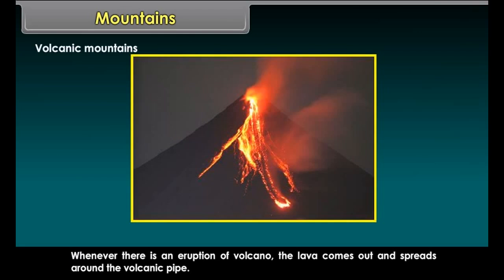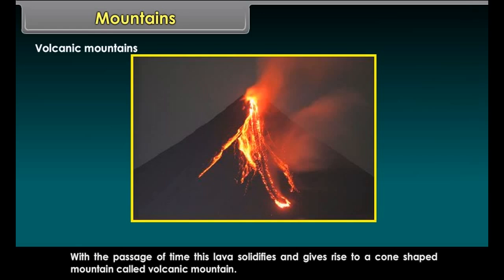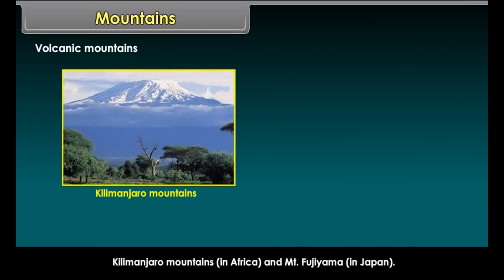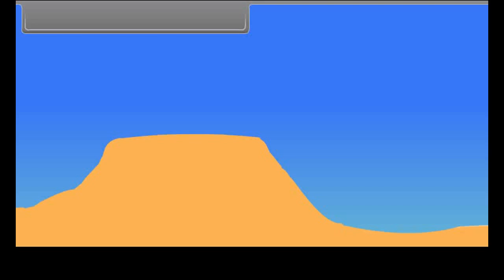Volcanic Mountains form whenever there is an eruption of a volcano. The lava comes out and spreads around the volcanic pipe. With the passage of time, this lava solidifies and gives rise to a cone-shaped mountain called a Volcanic Mountain. Kilimanjaro in Africa and Mount Fujiyama in Japan are examples.